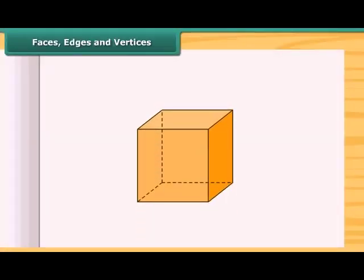Look at this cube. This is the face of a cube. This is the edge of the cube and this is the vertex of the cube. An edge is a line segment where the faces meet and the vertices are the points where the edges meet.